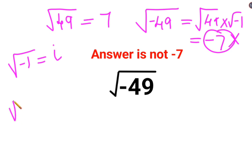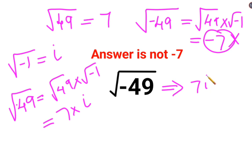So your root 49, negative 49 can be written as root 49 multiplied by root of minus 1. So this becomes 7 into i. So the answer for this question mark is supposed to be 7i.